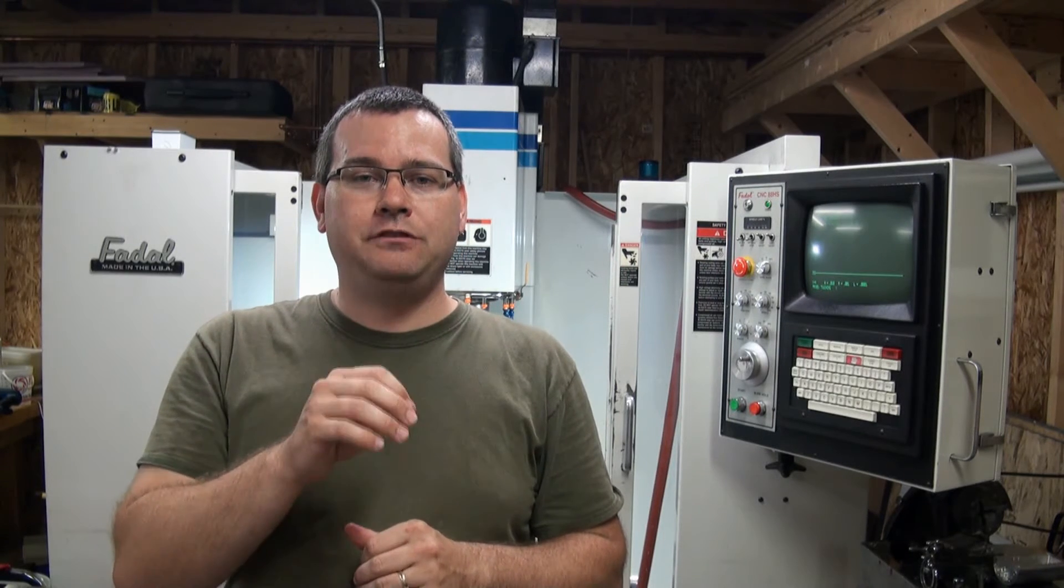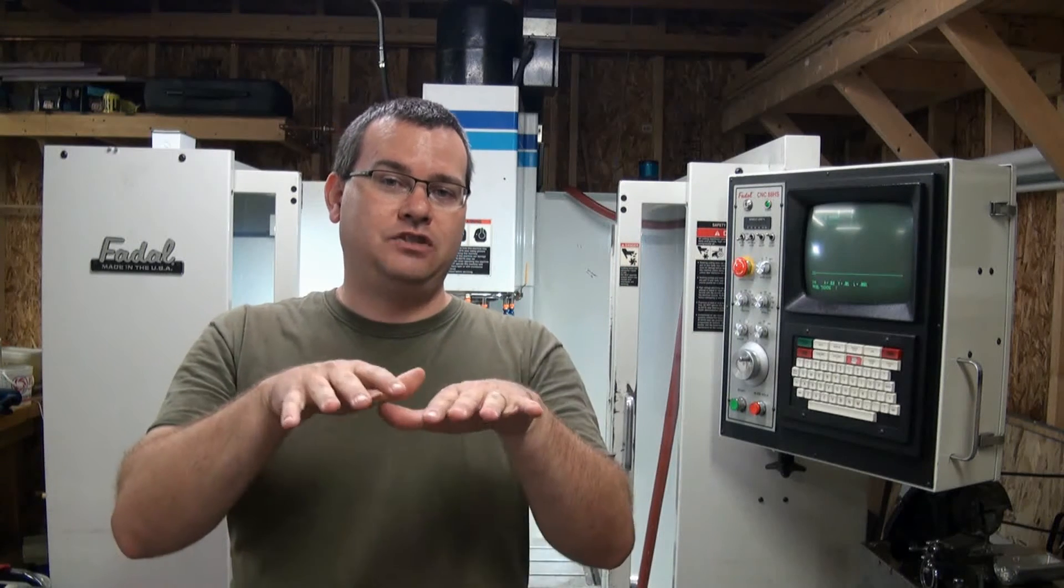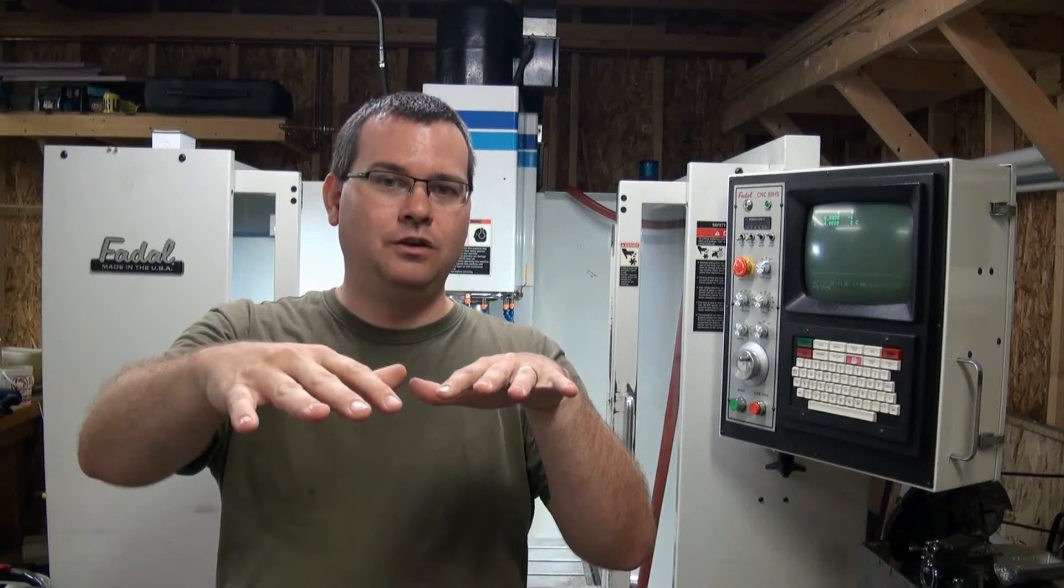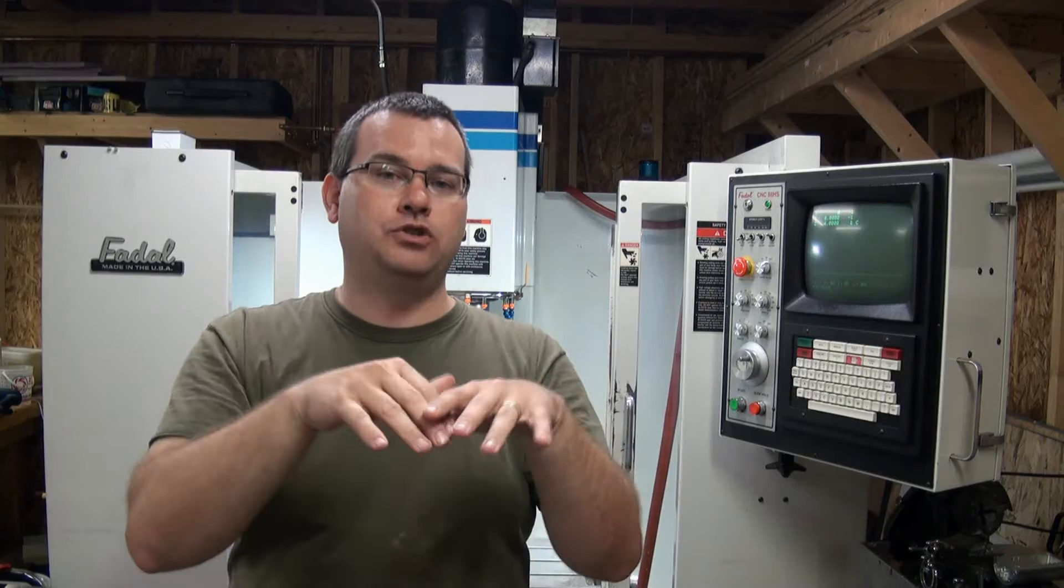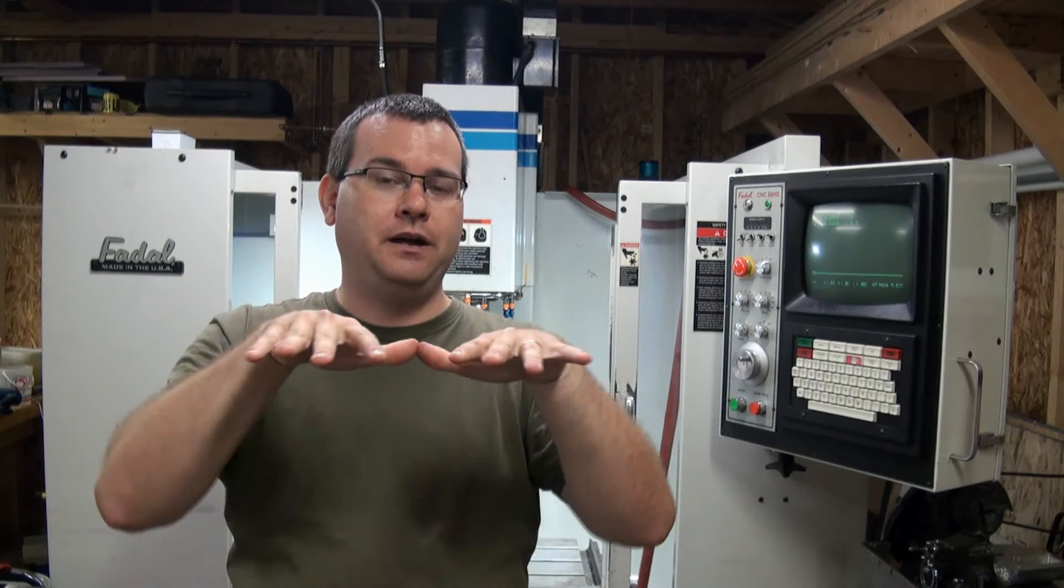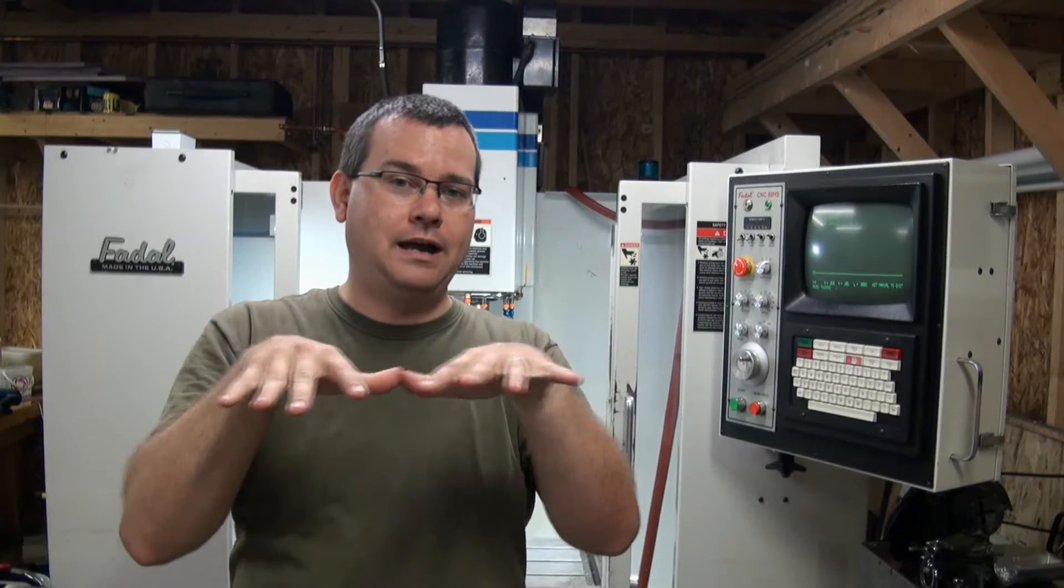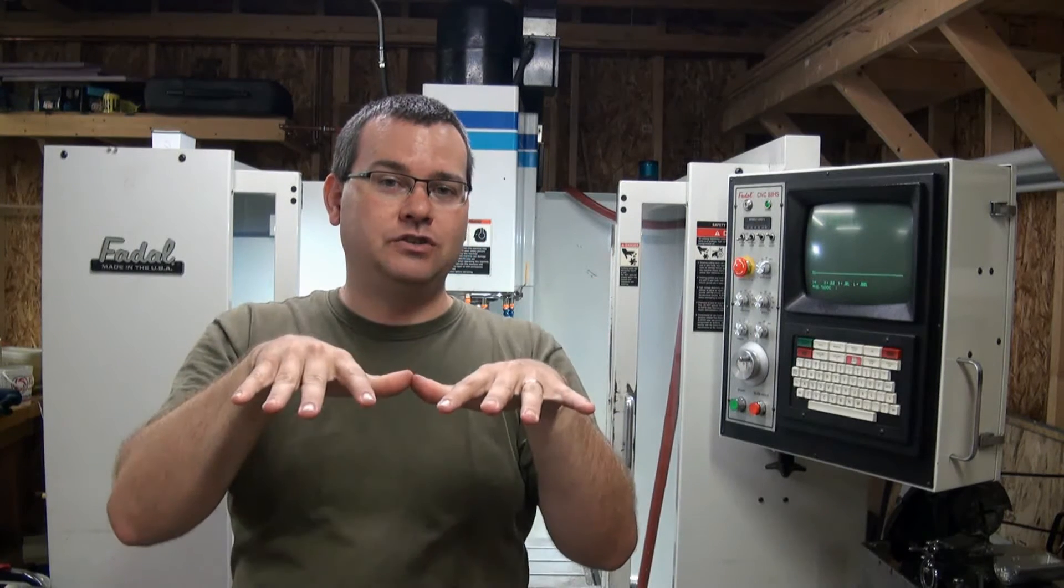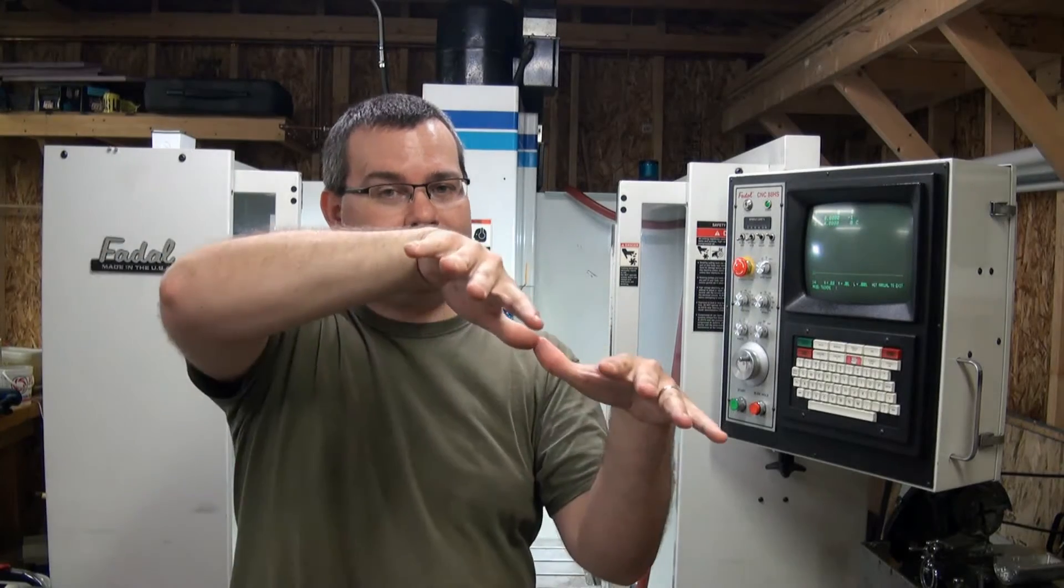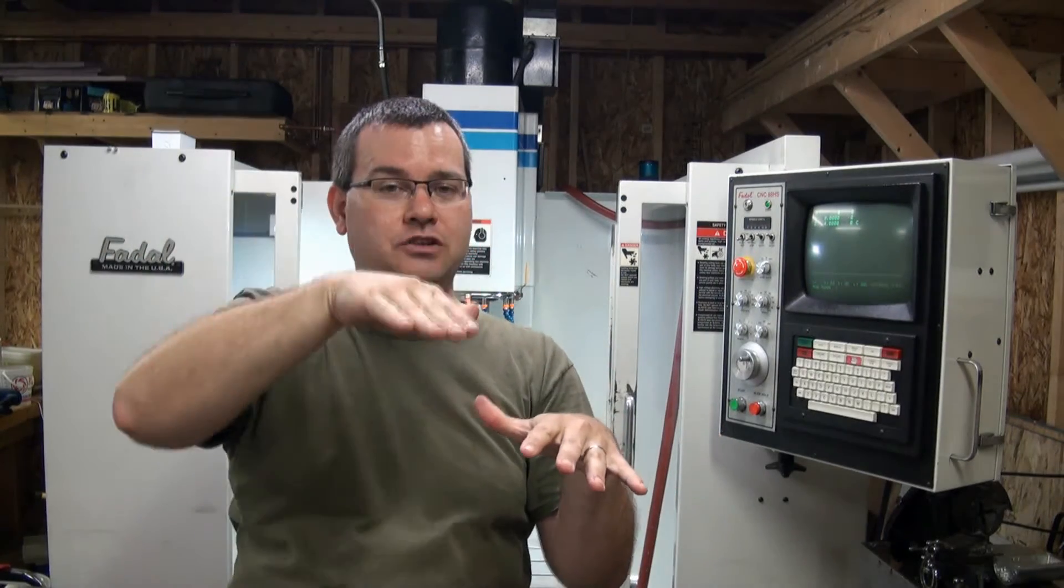The next step that we're going to do is we have to make sure that the surface of the table itself is in parallel with the plane of XY motion. As our table moves, we want that surface to move parallel with our X and Y so our part height doesn't change. If our table has some tilt to it as we move in X, our part height is going to change relative to Z, and that's going to give us some inaccuracies.